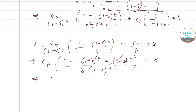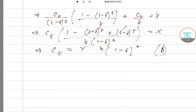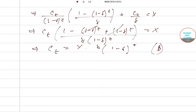We are left with ct = x·δ·(1−δ)^t. So this is our second option, b. Thank you, hope this was helpful to you. For other such videos, please visit our YouTube channel.